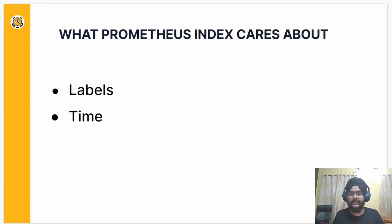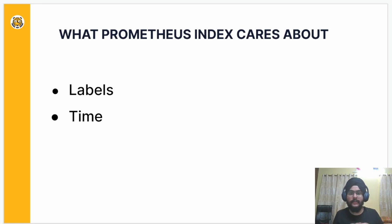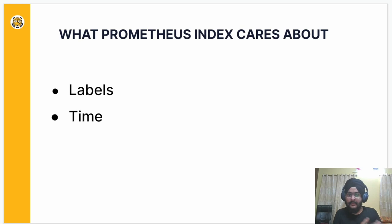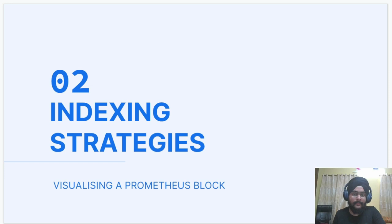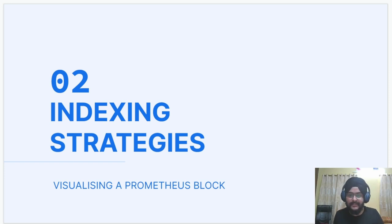What the Prometheus index cares about is labels and time. These are collected when Prometheus monitors a target. The value part in the Prometheus data model, which we learned previously, is not what the Prometheus index cares about. On a high level, let's see the indexing strategies that Prometheus uses.